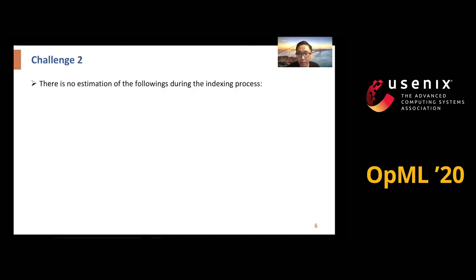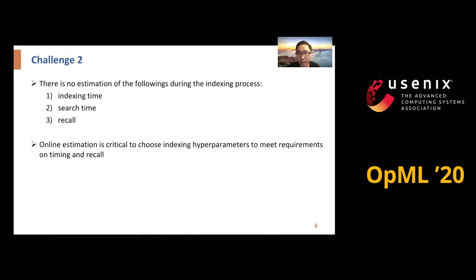For the second challenge, current ANN indexing algorithms are executed end-to-end, which means there is no estimation of indexing time, search time, and recall during the indexing process. However, having such online estimation is critical to choose indexing hyperparameters to meet requirements on timing and recall. Also, the online estimation must be lightweight, which is critical on mobile devices with limited hardware resources.